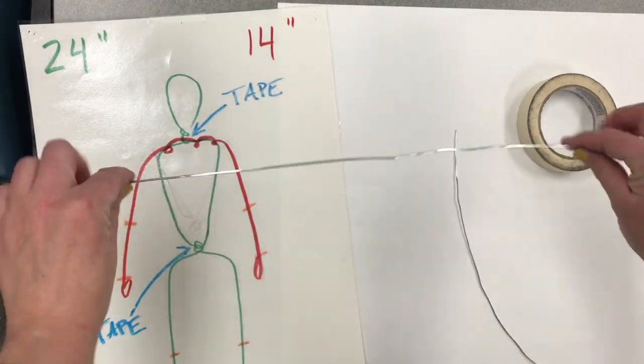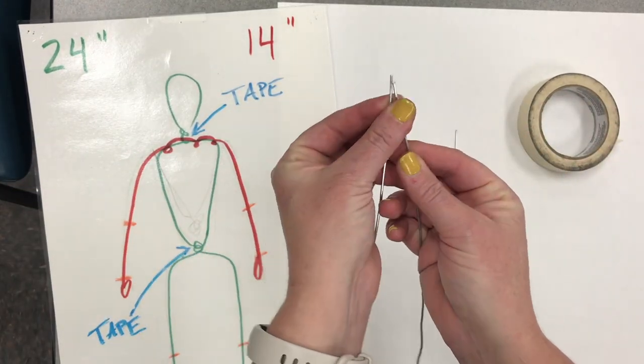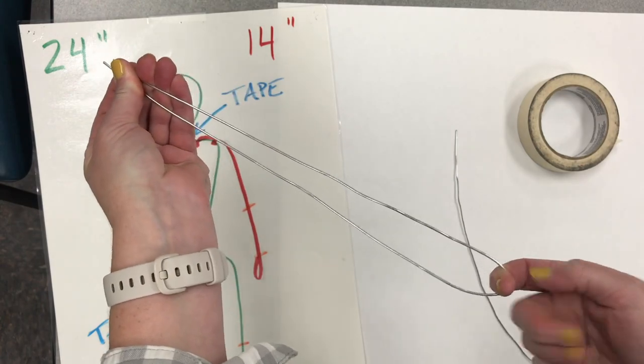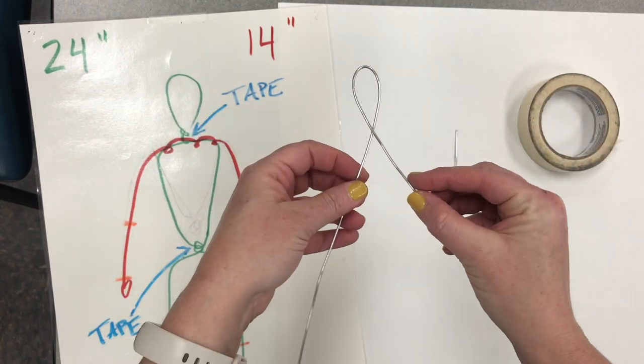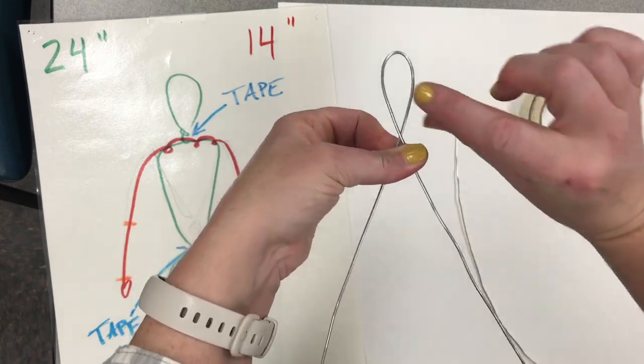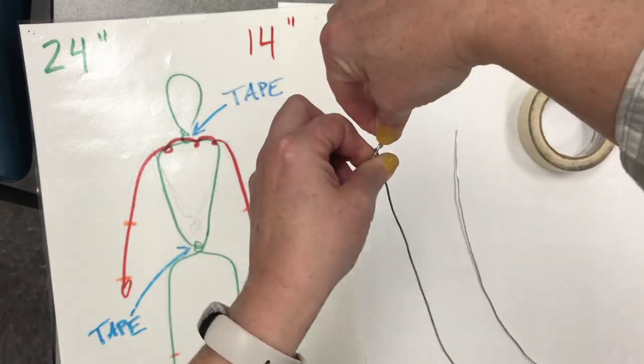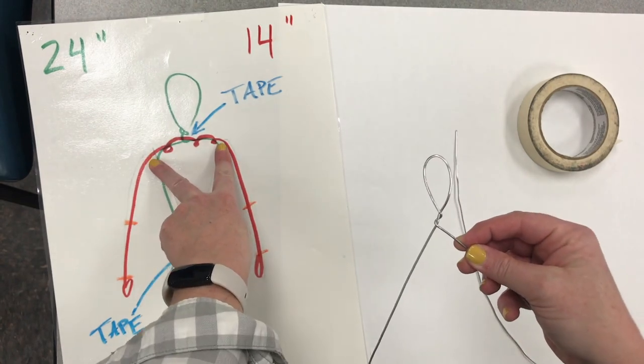We're going to start with the longer piece, the 24 inch piece. Line up the ends so they meet, pull it so it's tight. That bend is now going to be the head. Cross it and pinch below and above where it crosses for the neck and twist twice.